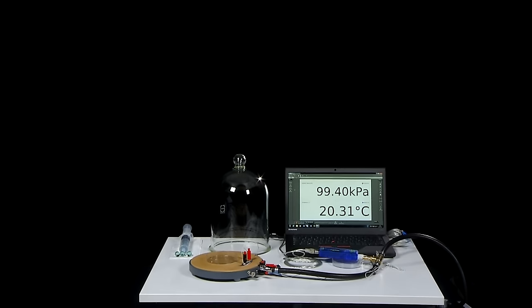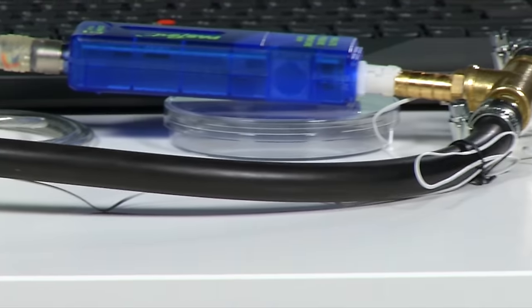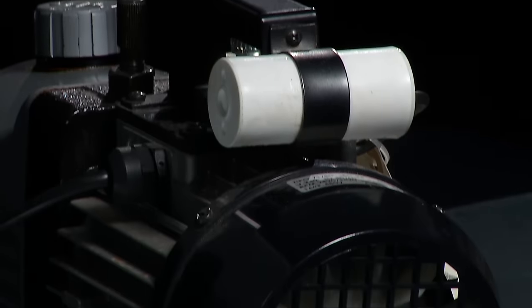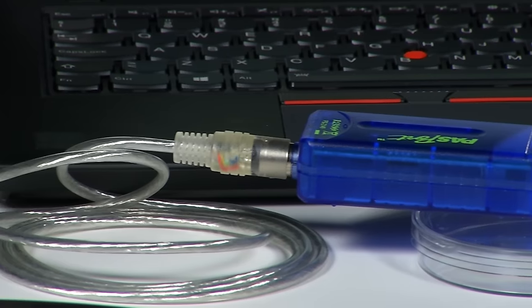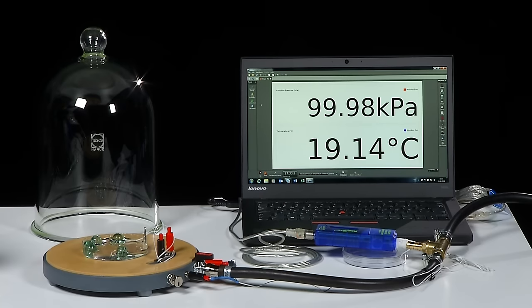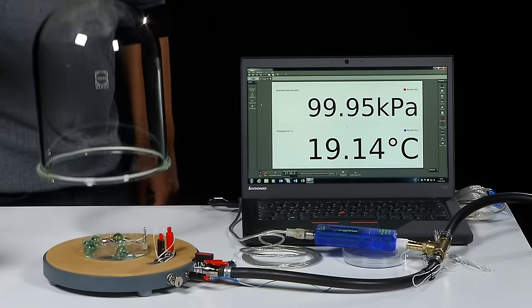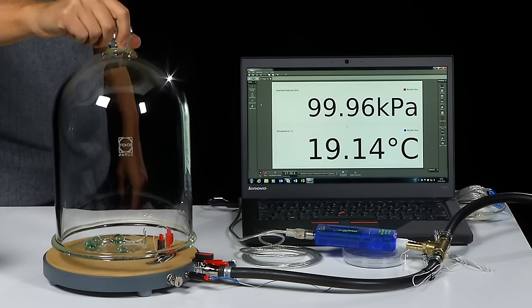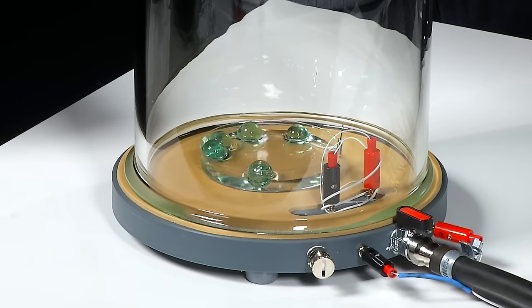For this experiment we need a vacuum chamber which is connected to a vacuum pump. A combined pressure and temperature sensor is connected to the hose between chamber and pump. It is also connected to a PC via USB and values of absolute pressure and temperature in degrees Celsius can be shown on the screen.